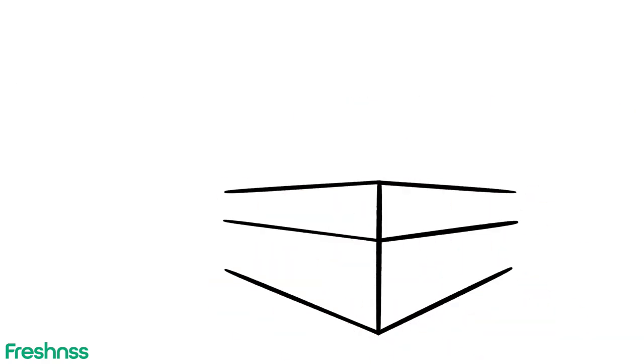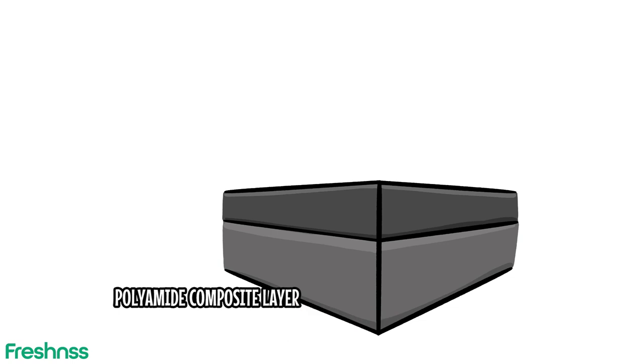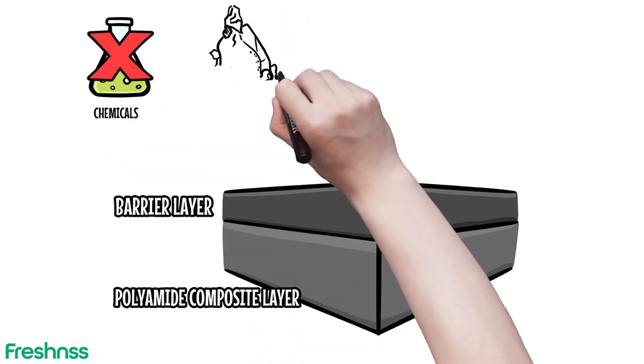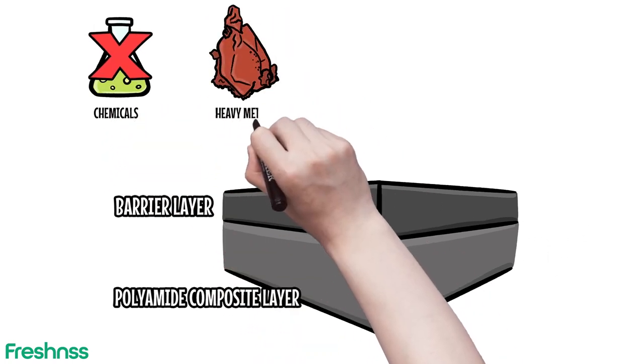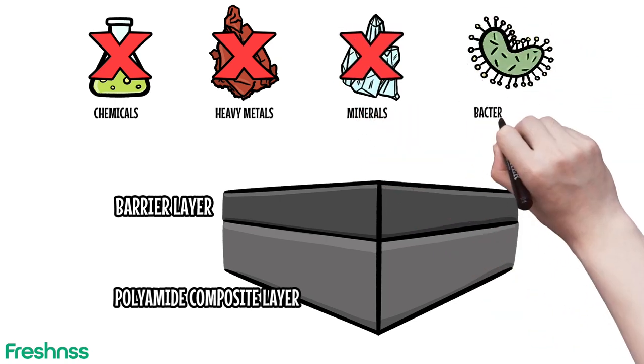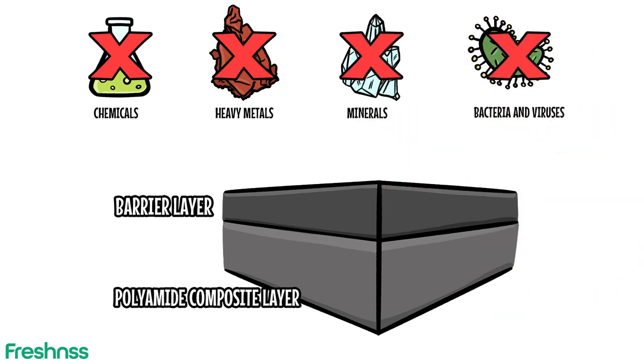Each membrane layer is composed of a polyamide composite layer and an extremely thin barrier layer. The composite layer helps support the very thin barrier layer, while it is the barrier layer that removes chemicals, heavy metals, minerals, bacteria, and viruses from the water.